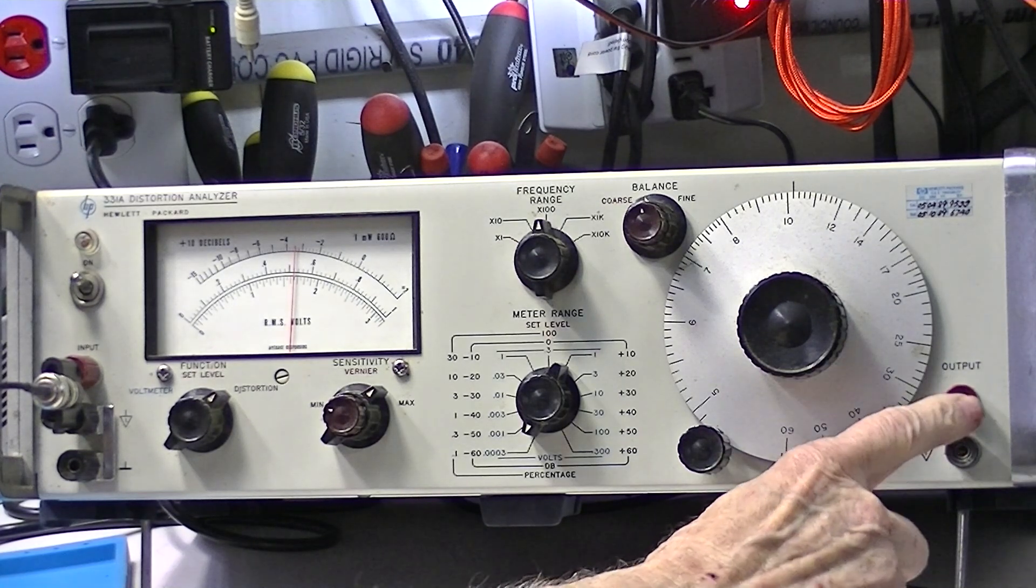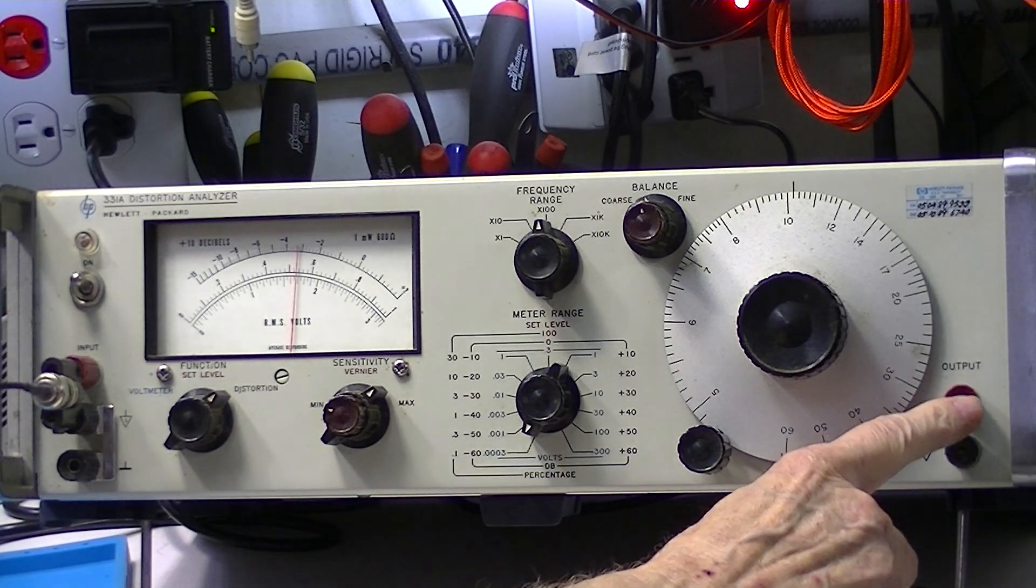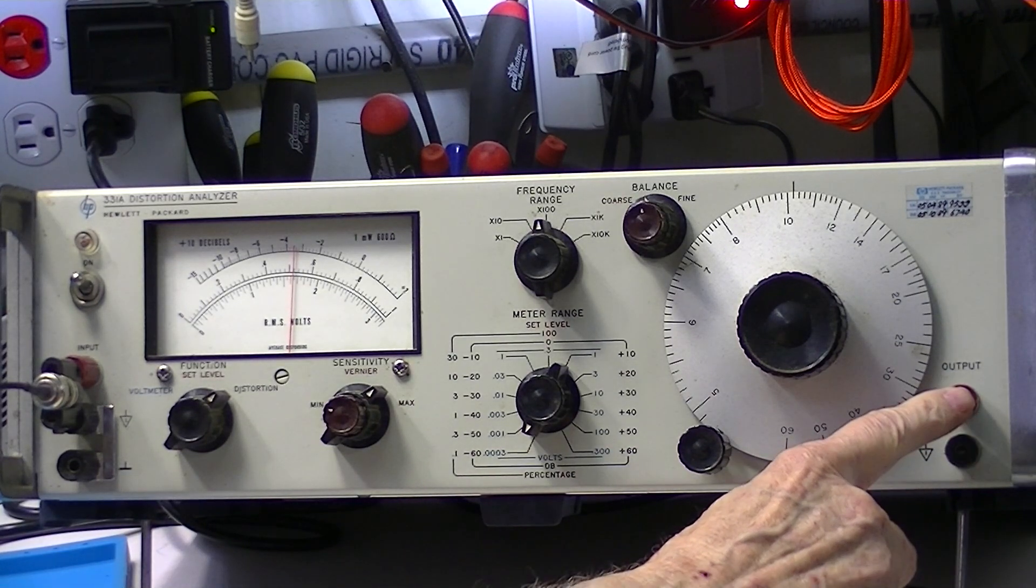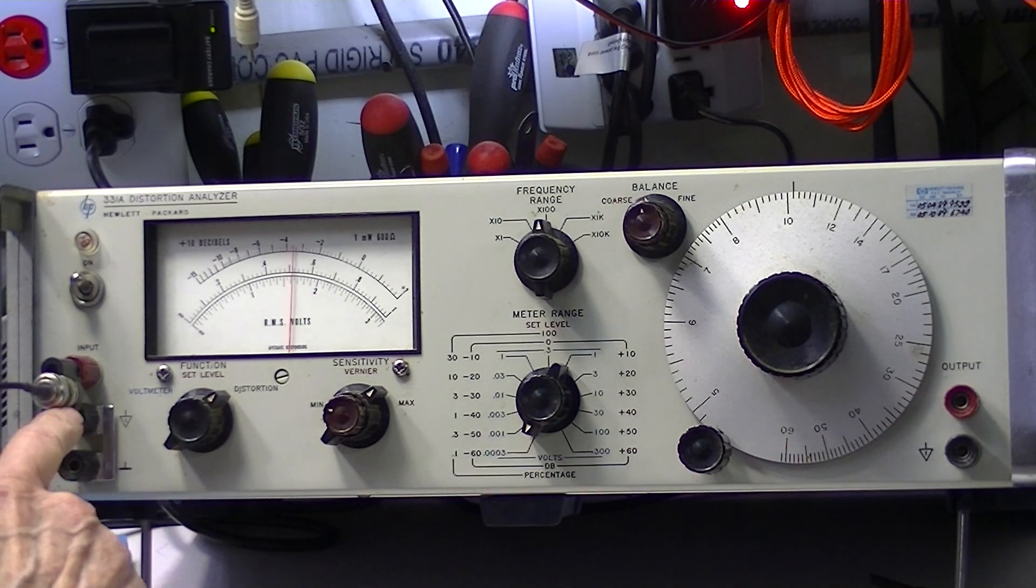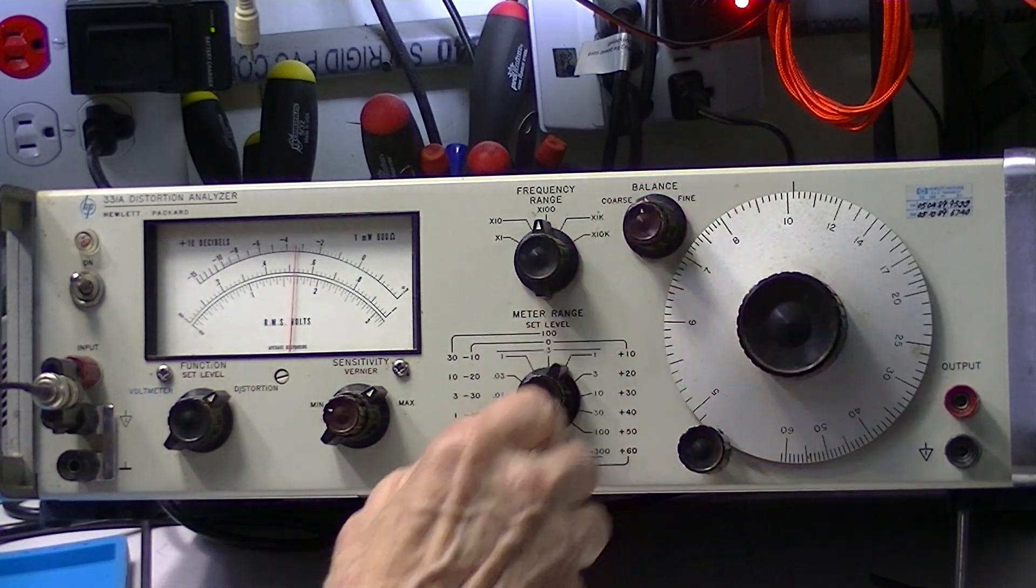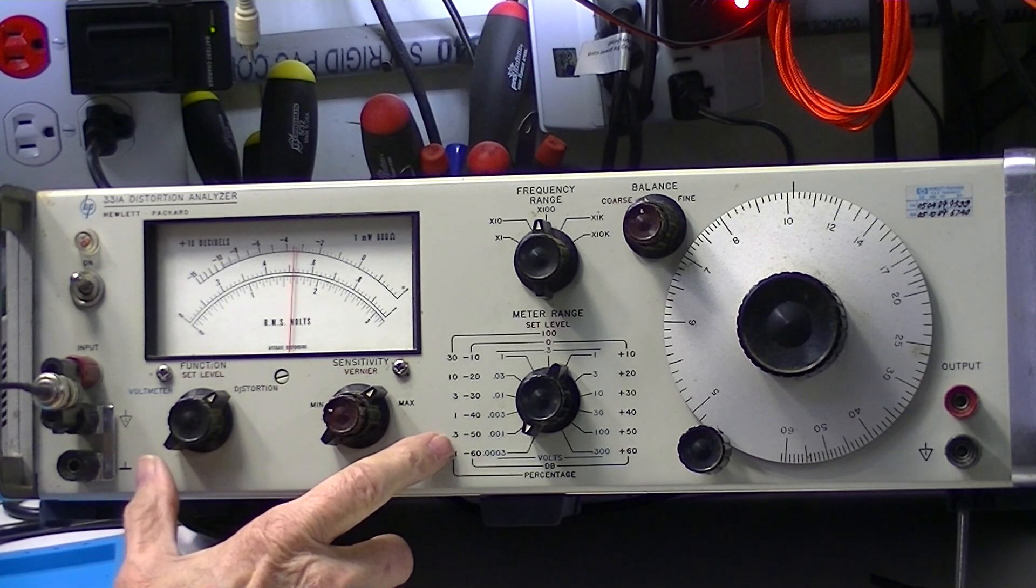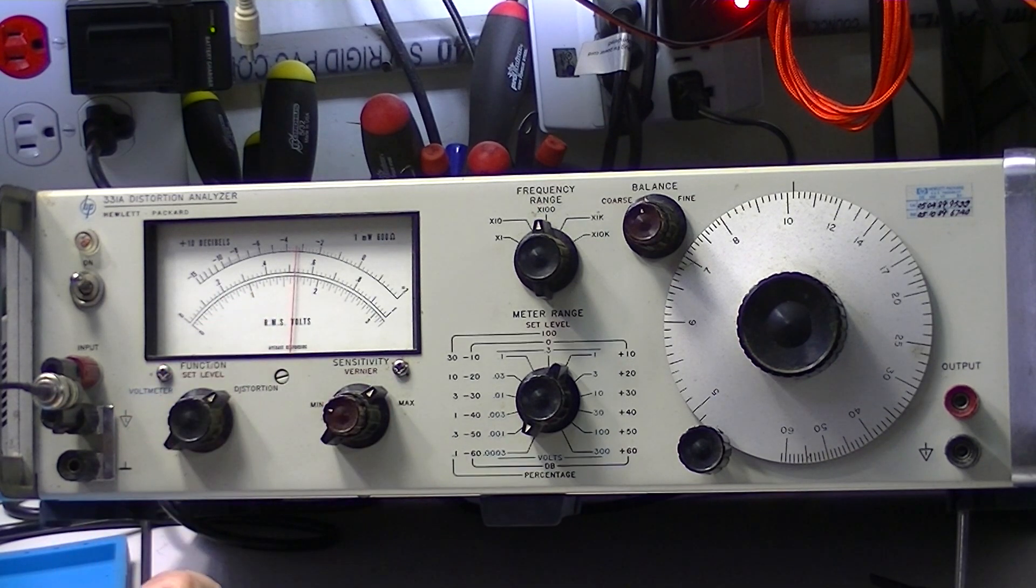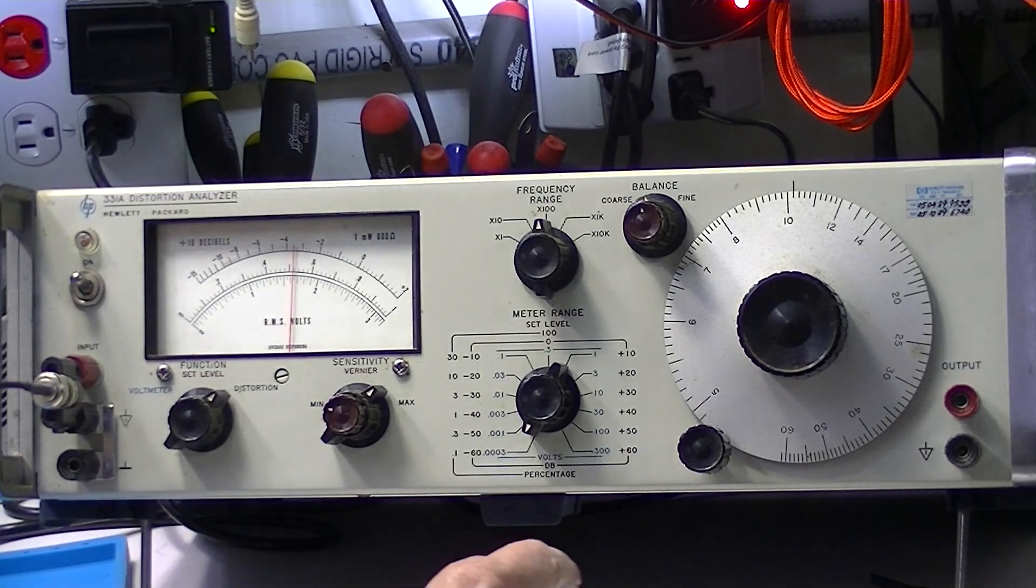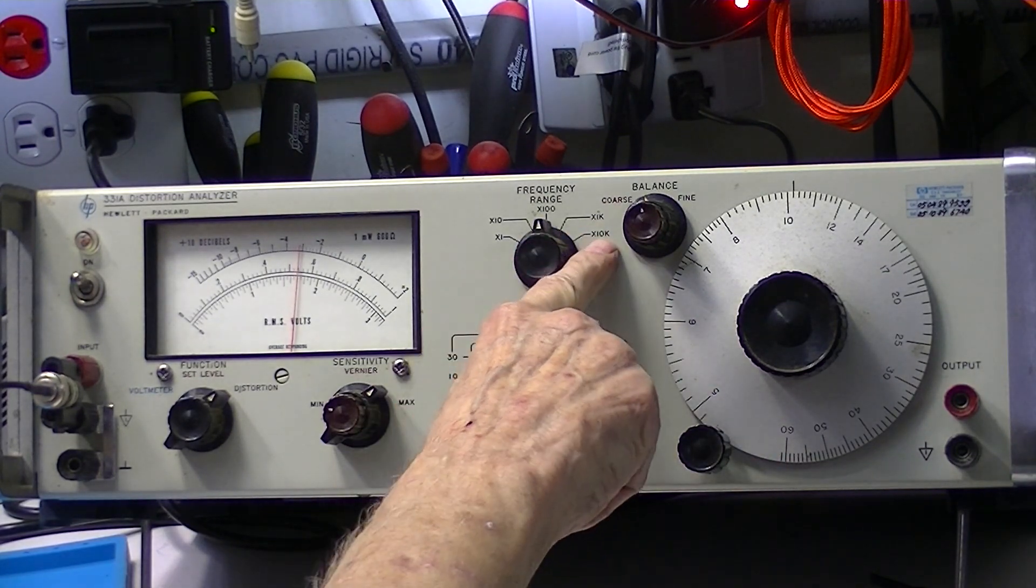If I wanted to, I could look at the remaining distortion products here, because this output is taken after the filter. Notice this is a 400 series Hewlett Packard RMS voltmeter. The total range of this thing is 600 kilohertz. Now let me hook up the little AliExpress board.